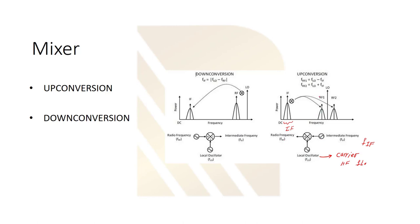This is called upconversion. The first component has a frequency of FLO plus FIF - this is our intermediate frequency and carrier frequency. We also have a second component which is FLO minus FIF.